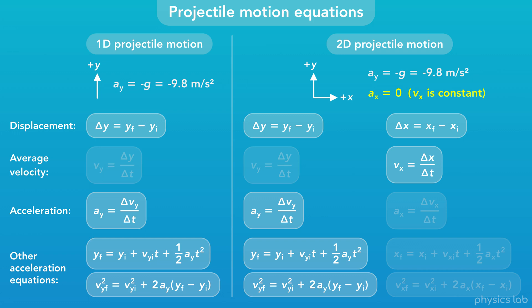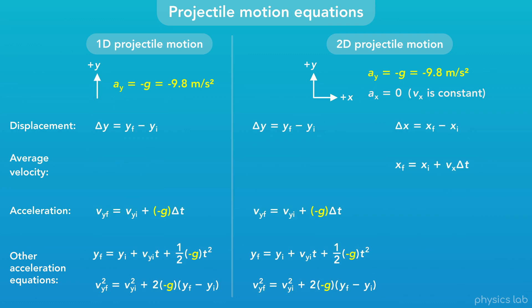And remember, the equations can be rearranged in different ways. If we say up is the positive y direction, then we're going to plug in negative g, negative 9.8 meters per second squared, for ay.